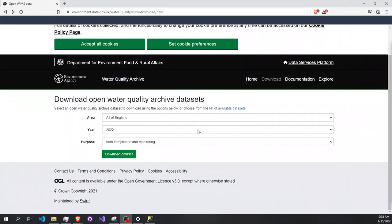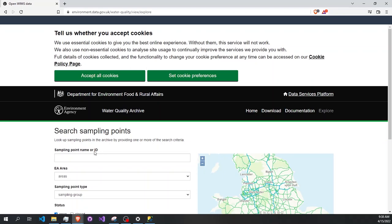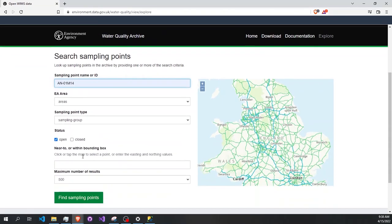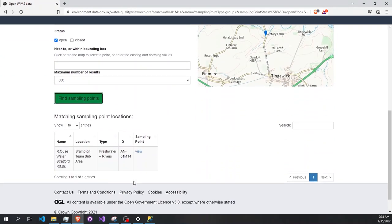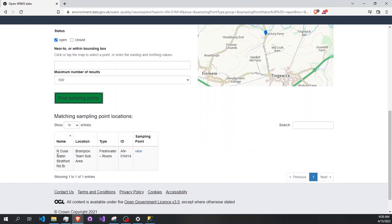Returning to the website, we go to explore, and here in sampling point name or ID we type the ID of the water location. Here we find sampling points with the name of the location, the location area, and the type of the water.